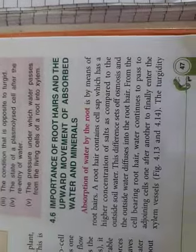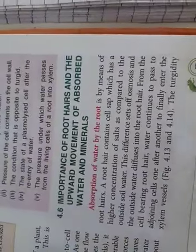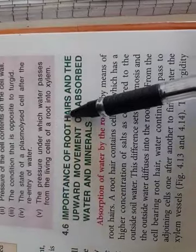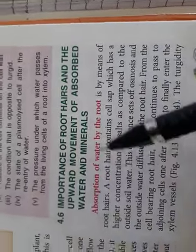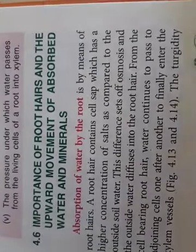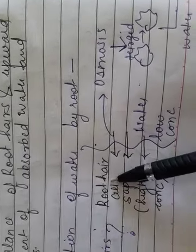Next point: the importance of root hairs and the upward movement of absorbed water and minerals. Why are root hairs present and what do they do for the roots? First, absorption of water by roots. The root hair has cell sap — the vacuoles which contain water. The root hair cell sap is at a very high concentration, and the root hairs absorb water from outside.